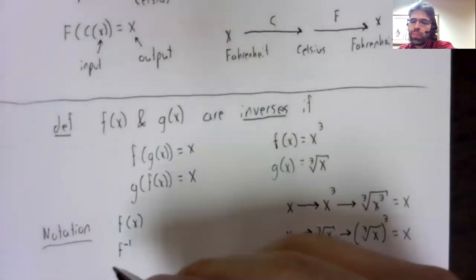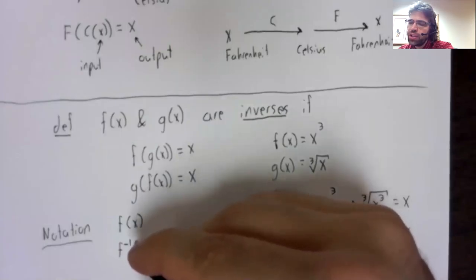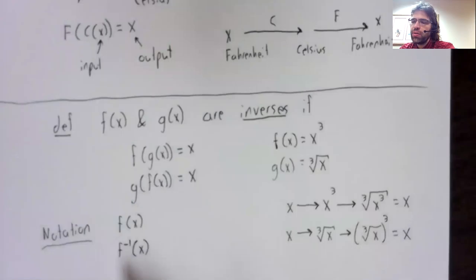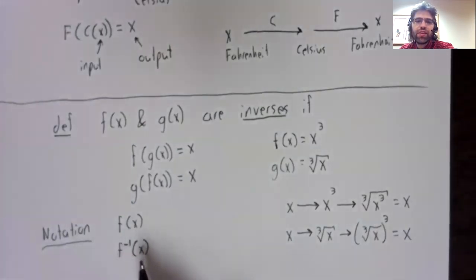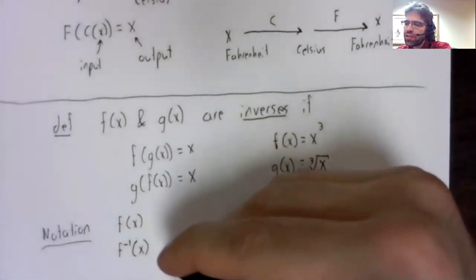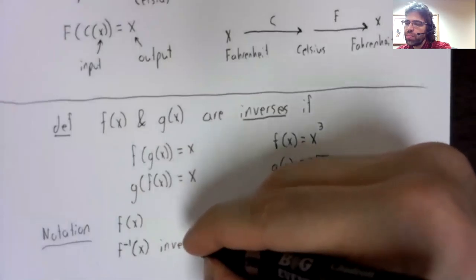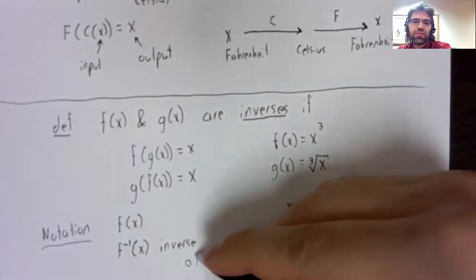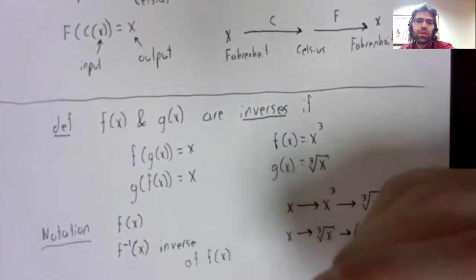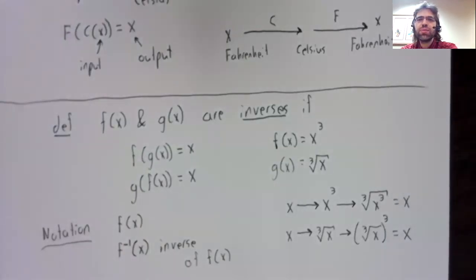Here we just call our functions f and g. But one piece of notation for the road. If you have a function f of x and you want to denote its inverse, you do so by putting a negative one in the superscript between the function name and the variable. This notation denotes the inverse of f of x.